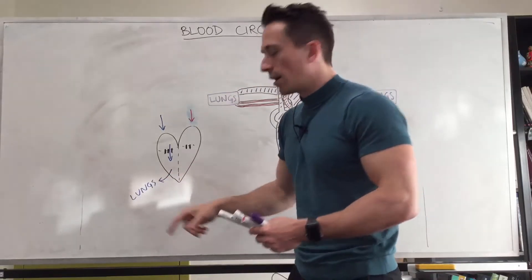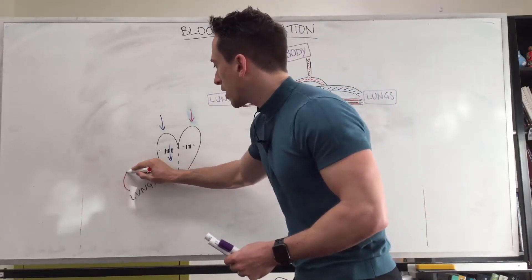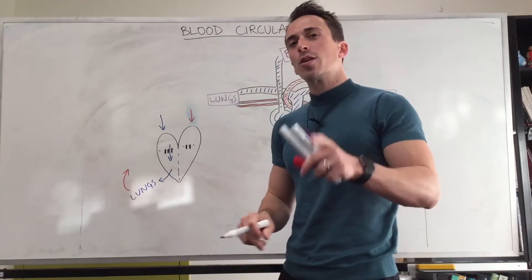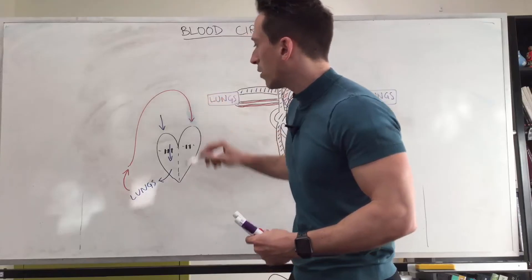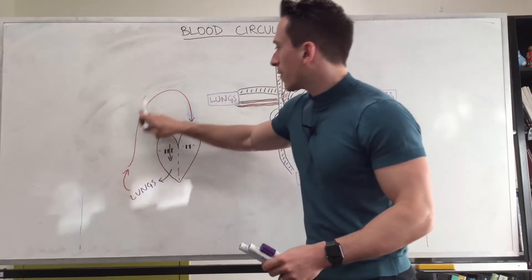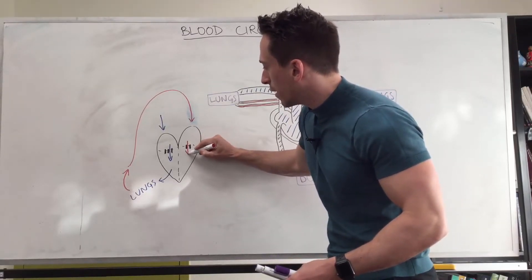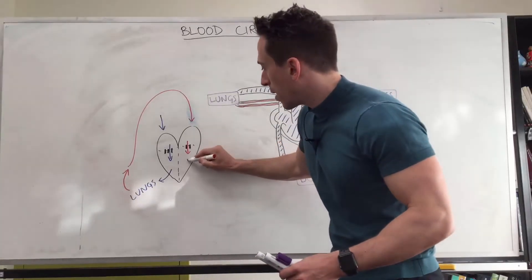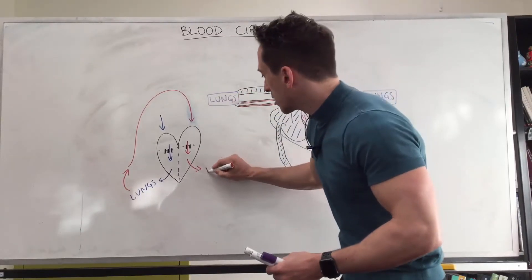Once it gets to the lungs, the lungs give it oxygen, so now what we have on the other side of the lungs is oxygenated blood. Now, if it's oxygenated blood it needs to be delivered to the body, but there's not enough pressure behind it because it's just come from the lungs. So it needs to go back to the heart — and blood always enters the atria. So we've got oxygenated blood from the lungs going back to the left atrium, through the bicuspid valve, and into the left ventricle, which pumps it out to the body.